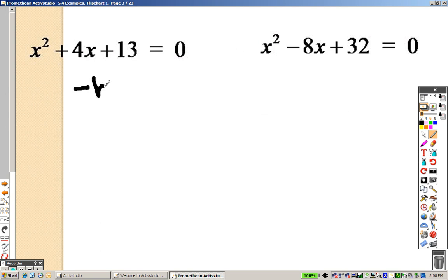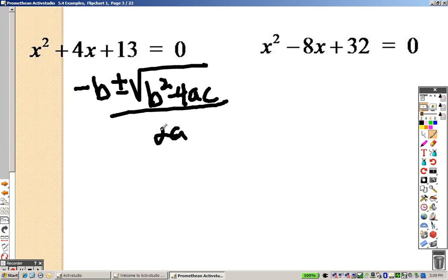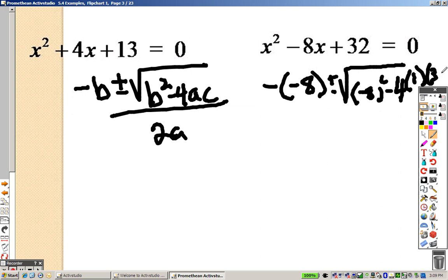So in this problem over here, negative b plus or minus the square root of b squared minus 4ac divided by 2a. So in this problem, b is negative 8 plus or minus the square root of negative 8 squared minus 4 times my a, which is 1, times my c, which is 32, all divided by 2a. So underneath the root sign, we end up getting negative 64.